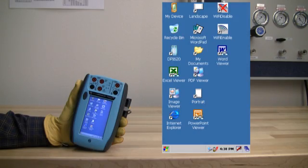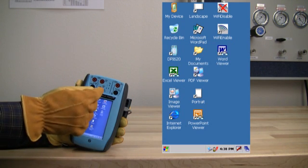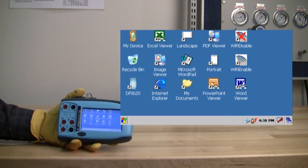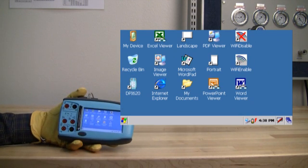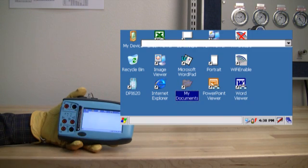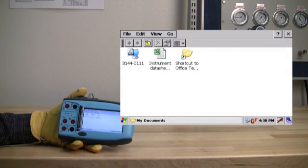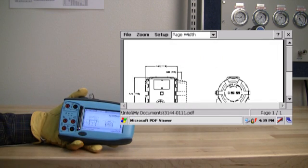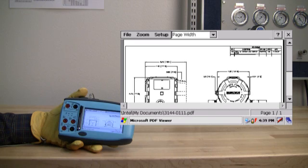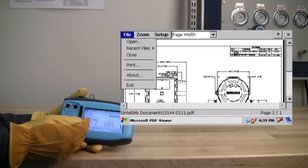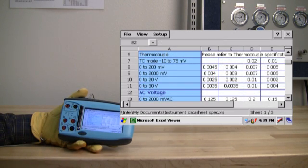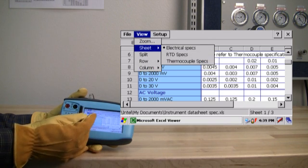Maintaining field devices typically requires technicians to carry a calibrator and a HART communicator in addition to maintenance procedures, safety information, device data sheets, and checklists for recording maintenance actions. A notebook PC could fulfill this task, but it is another large item to carry, and most are typically not allowed in many process environments. The DPI620 CE provides the solution, since it includes the Windows CE operating system with up to four gigabytes of memory for storing documents, spreadsheets, images, and training presentations.